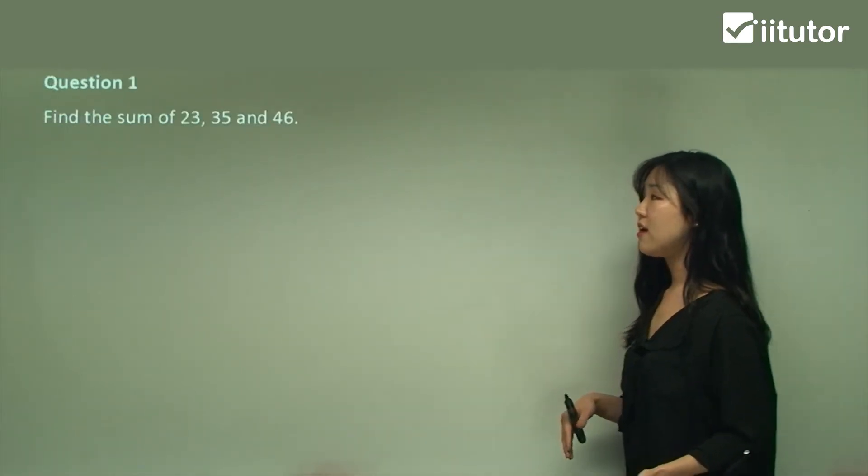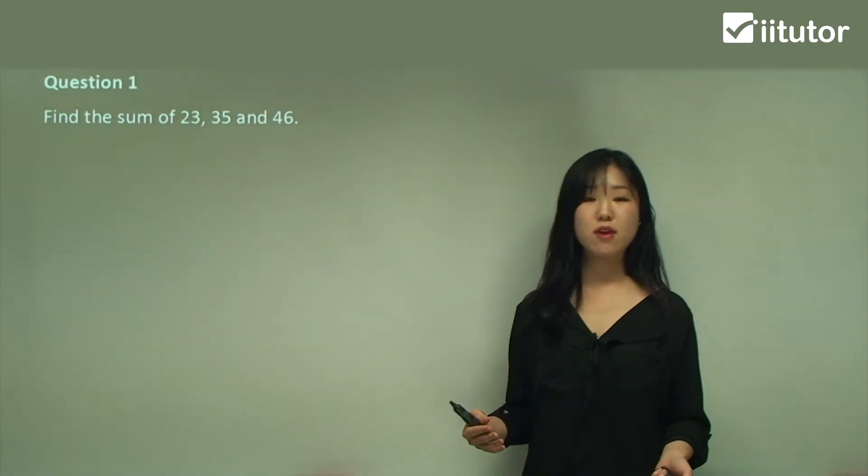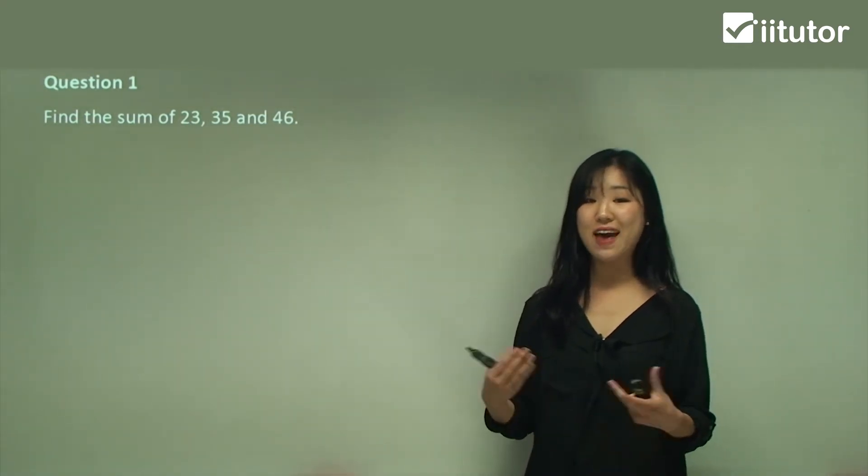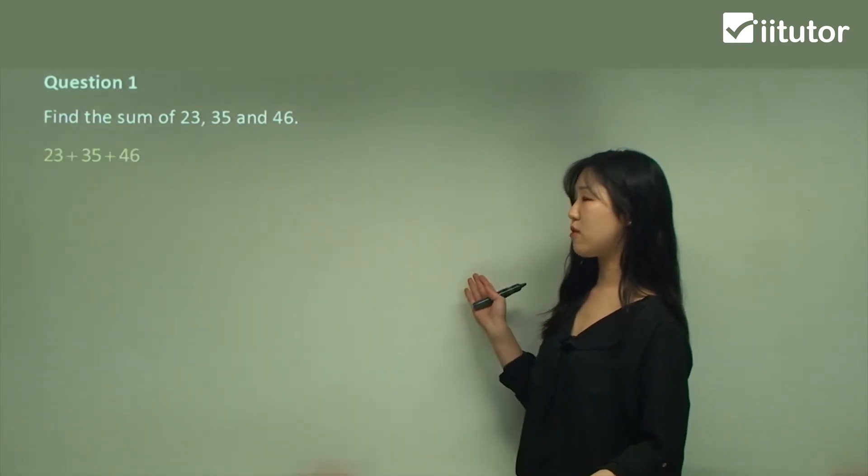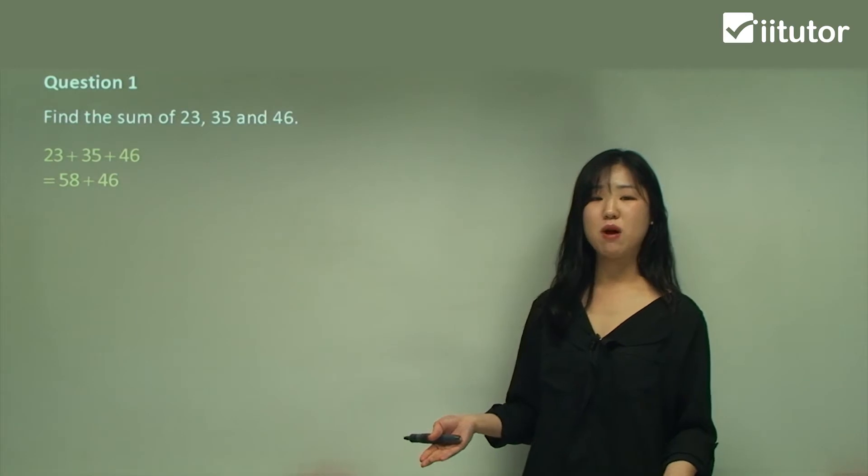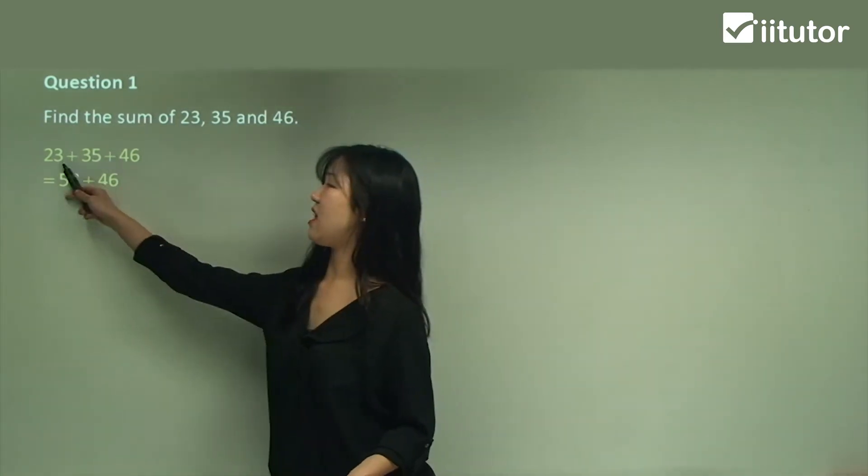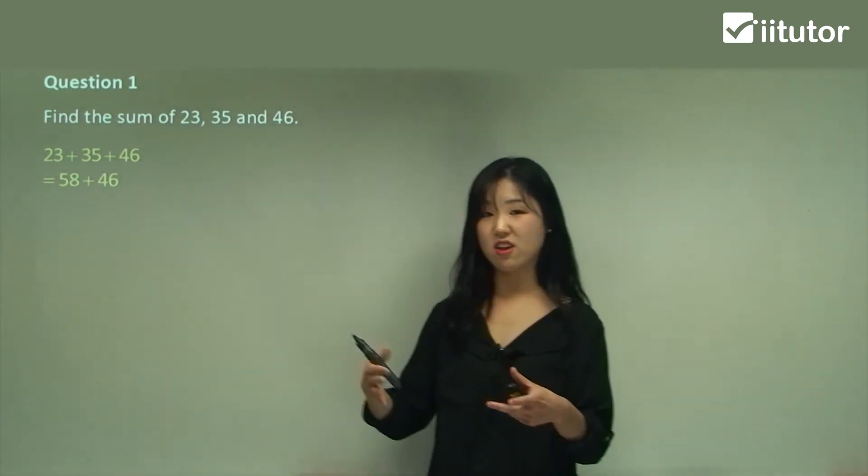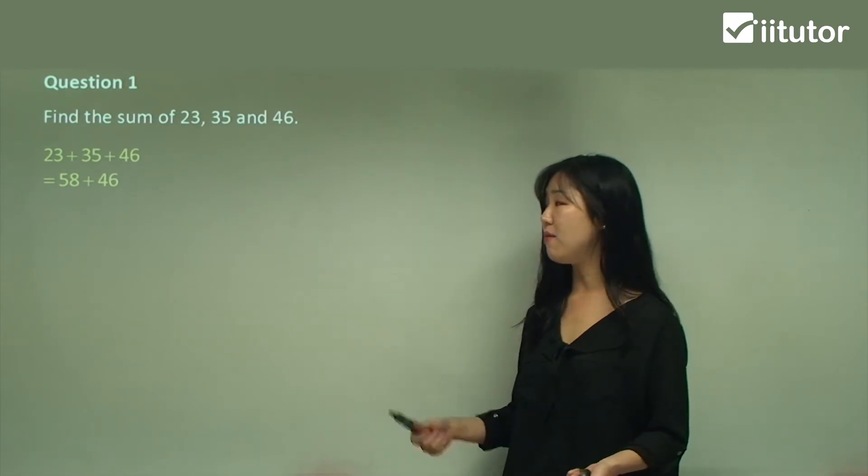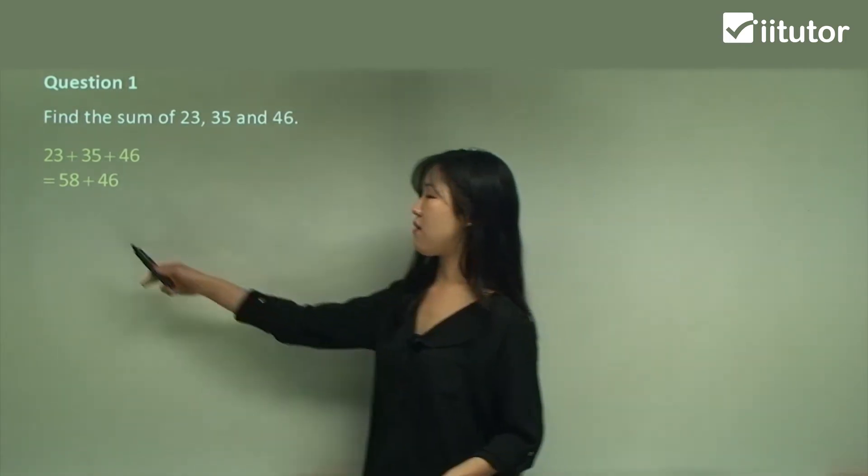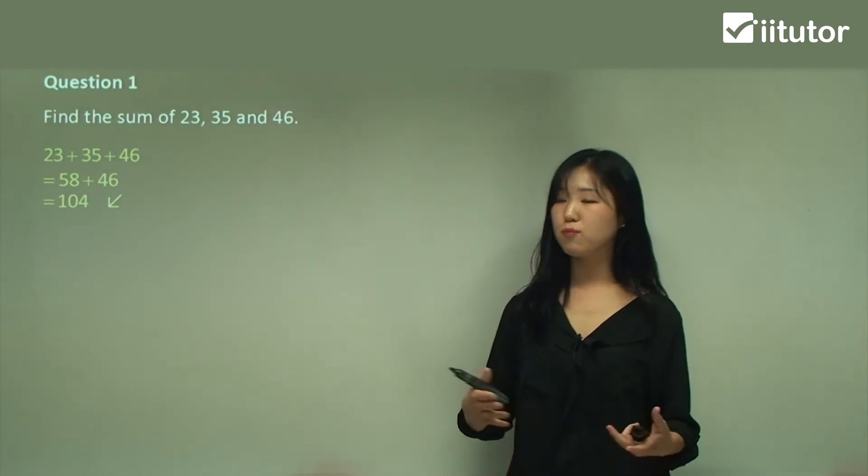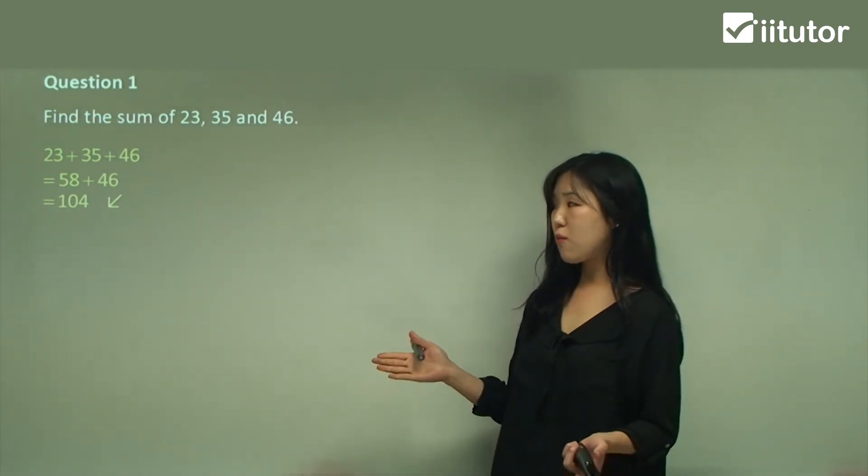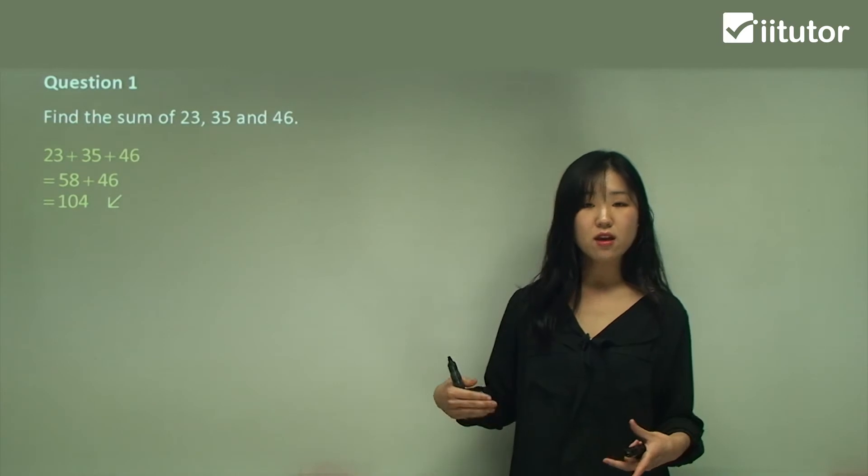Question one: find the sum of 23, 35, and 46. Sum means add, plus, right? So we're just going to add them all together. You guys can probably do that easily. Just add them up one by one. I added that one together first. I like to do one thing at a time just to make it a bit easier. So 23 plus 35 is 58, then plus 46 makes 104. Please feel free to do one thing at a time and go slowly just so you don't have to make those silly mistakes.